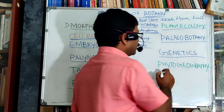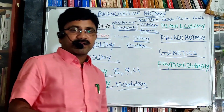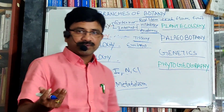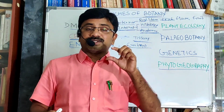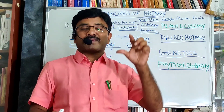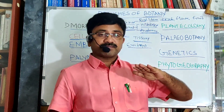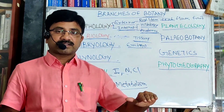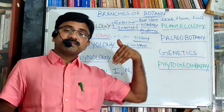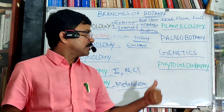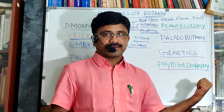Next, phytogeography. Phyto means plant. Phytogeography deals with the distribution of plants on this earth, both present and in the past, and is known as phytogeography.